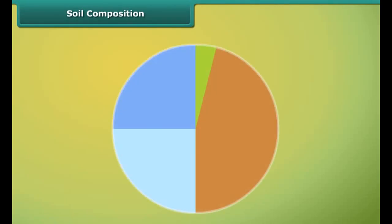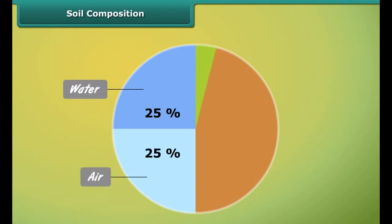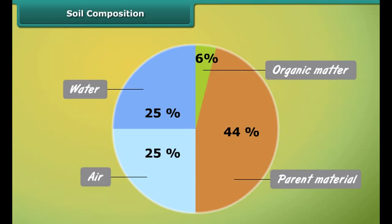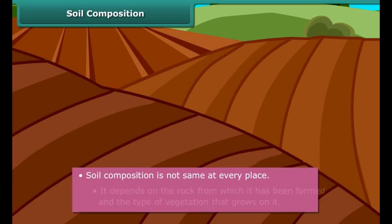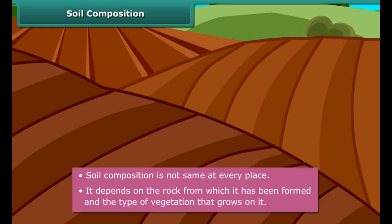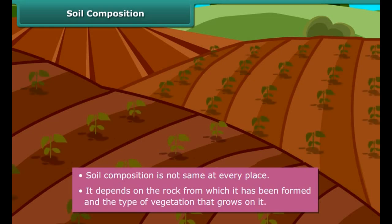Soil is a mixture of water, air, parent material and organic matter. Over time, these four components combine together to form healthy fertile soil. Don't think that soil composition is same at every place. It depends on the rock from which it has been formed and the type of vegetation that grows on it.